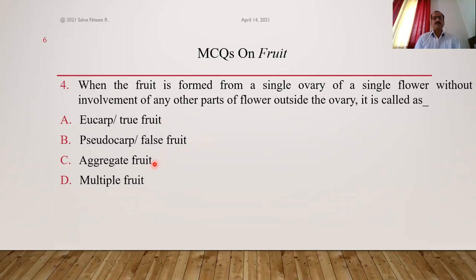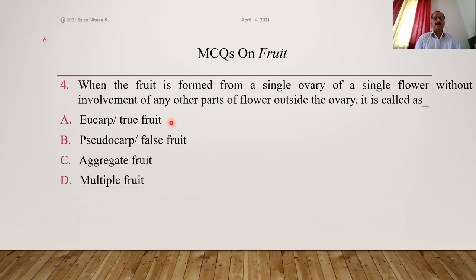All aggregate fruits are false fruits, all multiple fruits are false fruits, and simple fruits developing from inferior ovary are also false fruits. Simple fruits developing from superior ovary are true fruits — called eucarp. So the correct option is true fruit, eucarp.